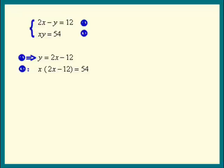At this point, we could actually cancel out a 2 from each term, but let me multiply everything out first. We'll get 2X squared minus 12X equals 54. Divide each term by 2. We get X squared minus 6X equals 27.